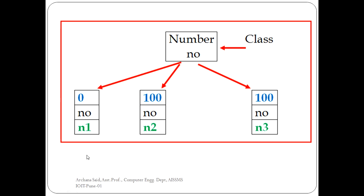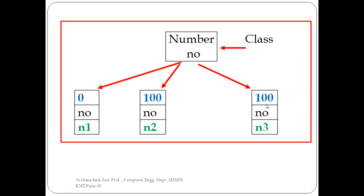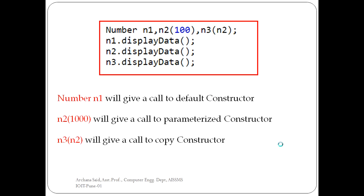In memory, the 'Number' class shows: object n1 with its own local copy of 'no' having value 0, n2 with its local copy of 'no' having value 100, and since n3 was created with n2, its 'no' also has value 100. This is the memory layout of a class and its respective objects. So: n1 calls the default constructor, n2 calls the parameterized constructor, and n3 calls the copy constructor.